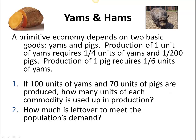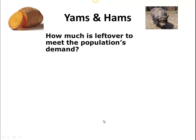In the previous video, we answered question number one, and so we have a production level of 100 units of yams, 70 units of pigs, and we found out how much was used up in the production process. So then the question becomes, how much is left over to meet the population's demand? And so let's answer that question.